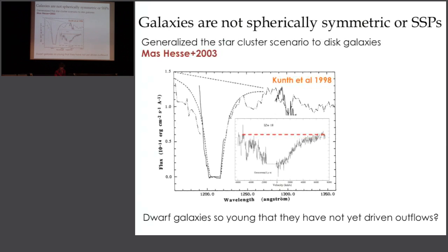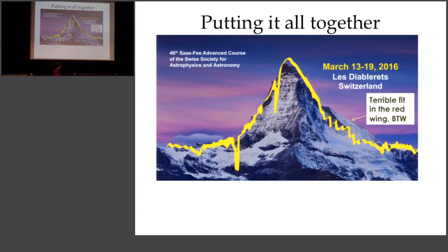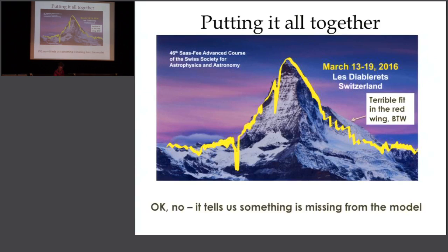We're going to play a little game to put all this together, combining not only Lyman-alpha emission from galaxies but also what we've covered in this school. Starting with this spectrum and this image — there's an atrocious fit in the red wing, but that's okay because it's telling us a vital component of our model is missing. So we learn stuff.